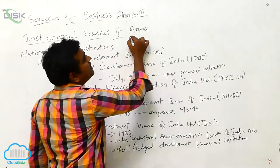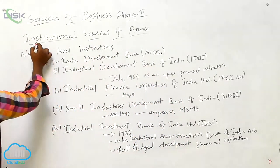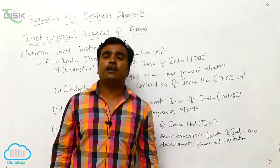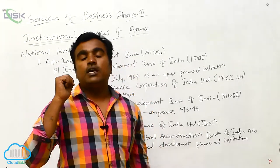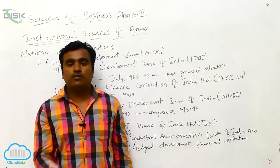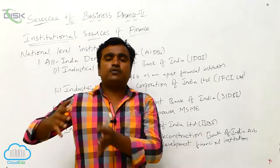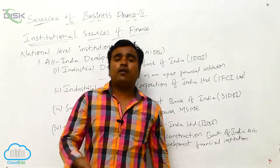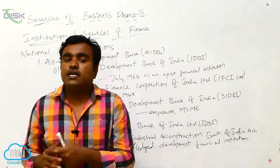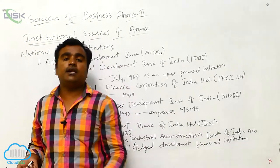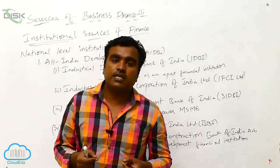Institutional sources of finance are part of the organized sector. The Government of India, in order to provide adequate credit facility to industries, has formulated different types of financial institutions. These institutions were developed to provide industrial credit and services, mainly concentrating on large-scale, medium-scale, and small-scale sectors.